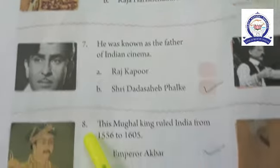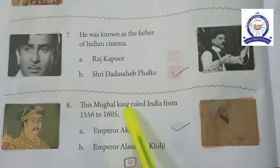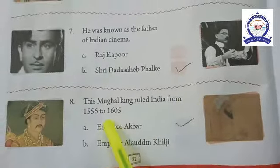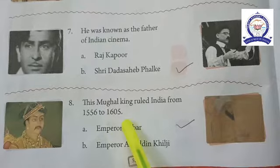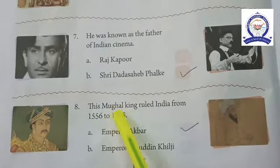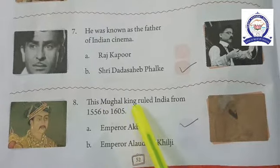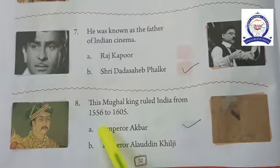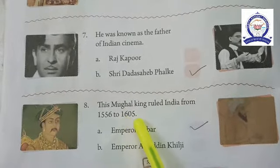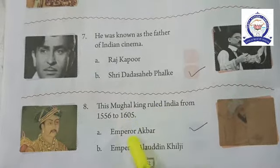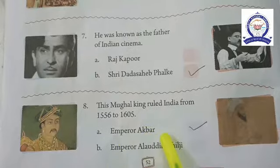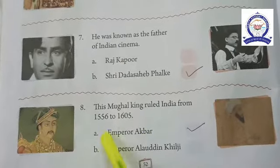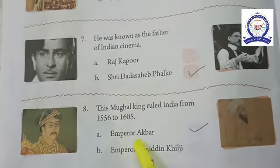Number eight: this Mughal king ruled India from 1556 to 1605 — the answer is Emperor Akbar. Hope you all understood the lesson. Thank you.